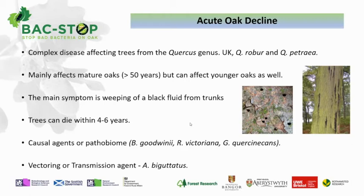The causal agent is quite complex — it actually consists of a number of bacteria that work together, along with the beetle. These are Bruneria gudwinia, Ronella victoriana, and Gypsielloquus minkans. These three species are the most common bacteria associated with acute oak decline. And again, we need to understand the role of the beetle and how it transmits the bacterial agents causing AOD.